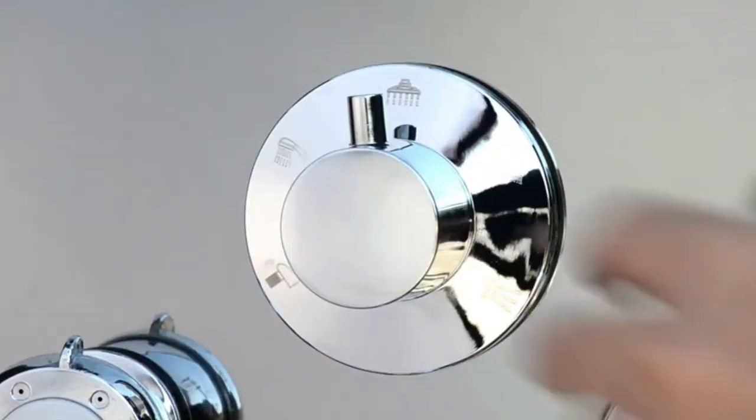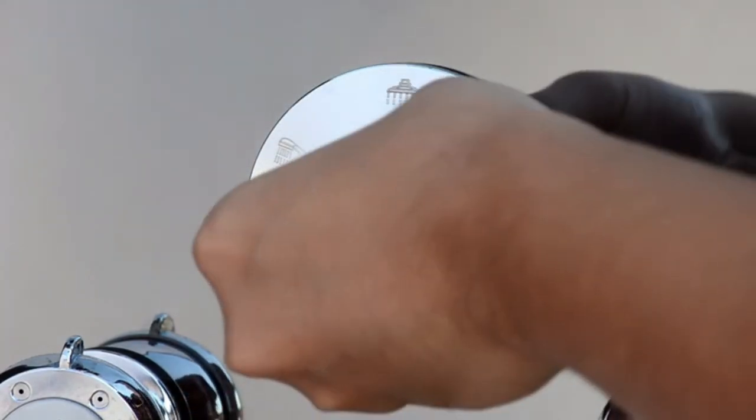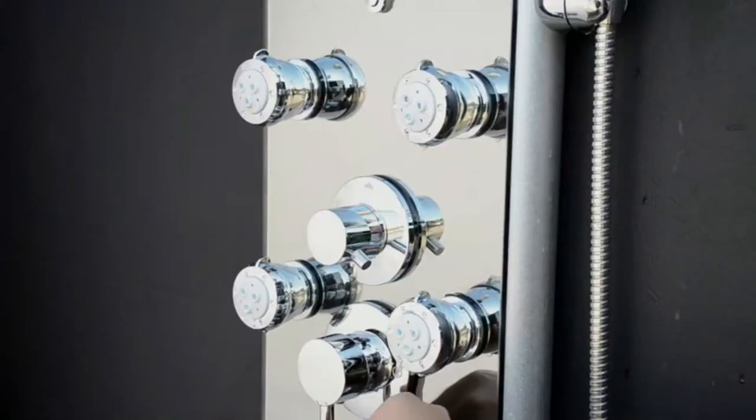The next three settings on the selector operate the body spray pods. Each option on the selector activates the bottom four pods, all the pods, and the top four pods respectively.